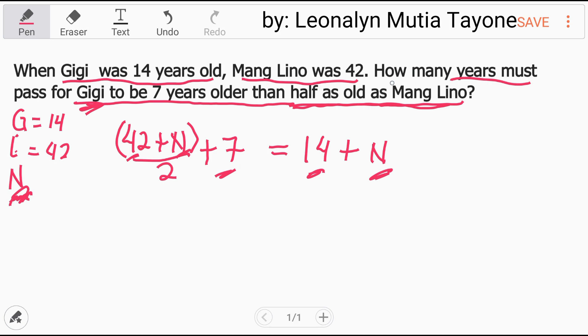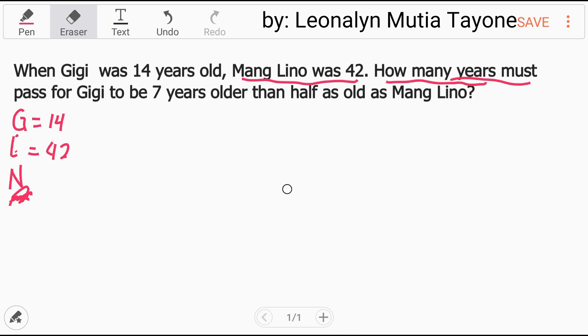That's the equation for this age problem. To understand better before we solve, let me repeat. 14 is Gigi's age, Lino is 42. Let N be that year. How many years must pass for Gigi to be seven years older than half as old as Mang Lino?